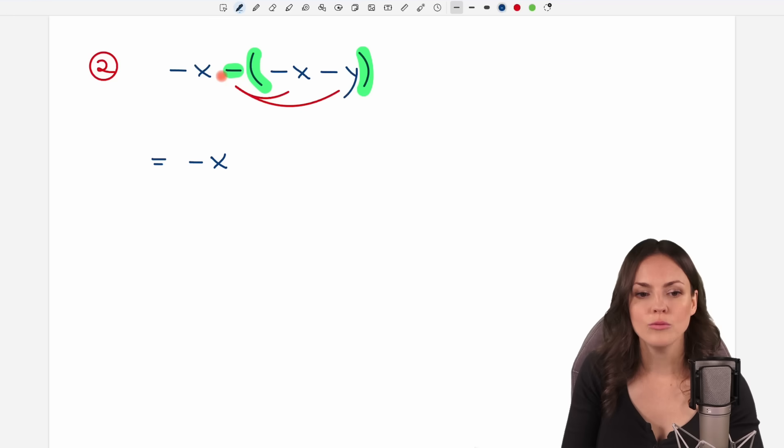And now what have we learned? We have to change the signs of each element inside here. So instead of my negative x, I get a plus x here. And instead of my negative y, I get a plus y. No parentheses anymore. Now I can simplify a little bit. I have minus x plus x, which cancels out, and only my y is left in the end.